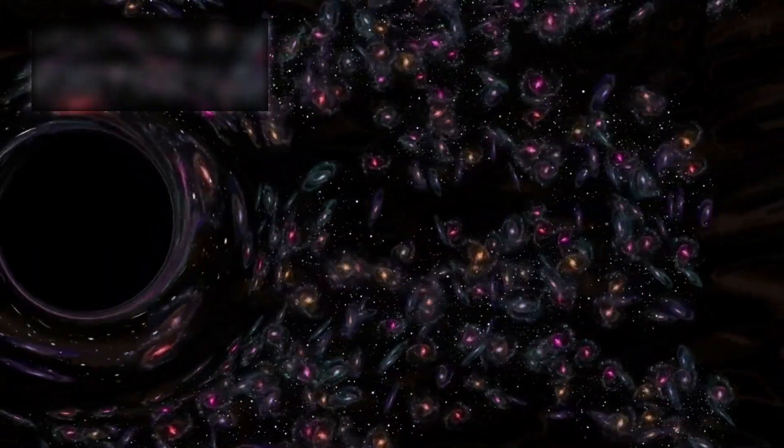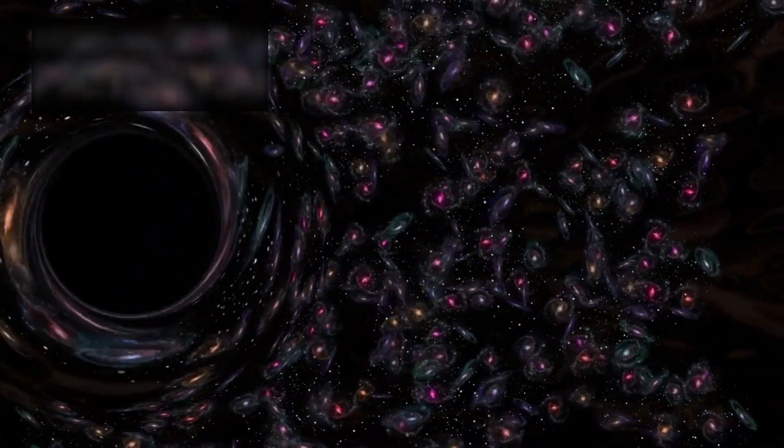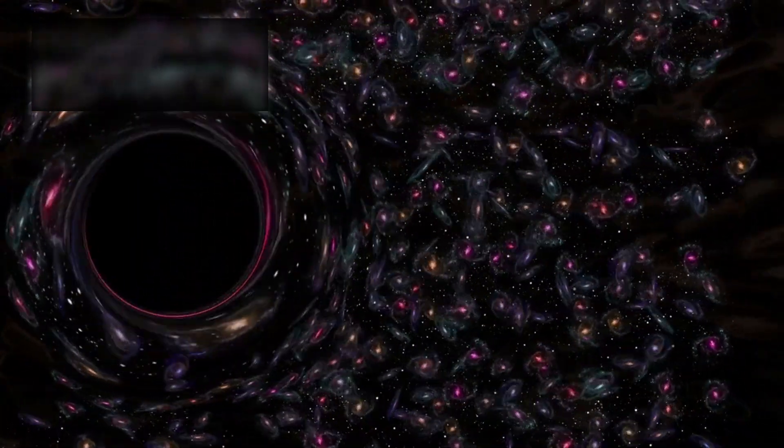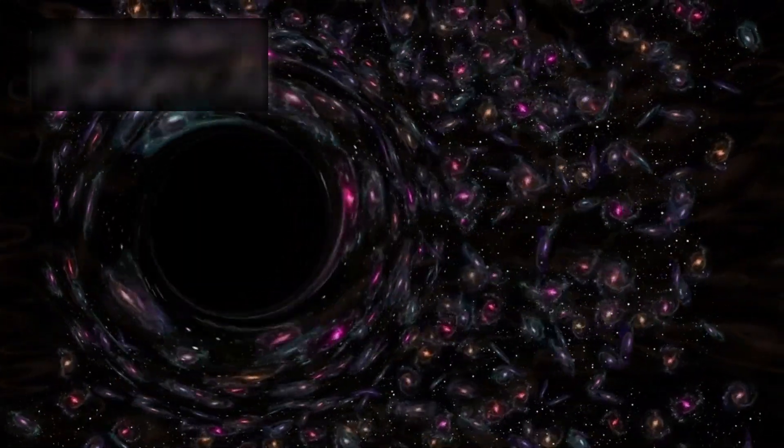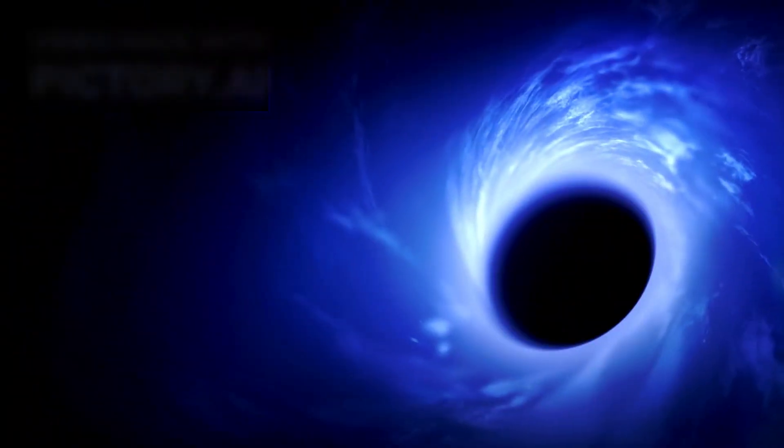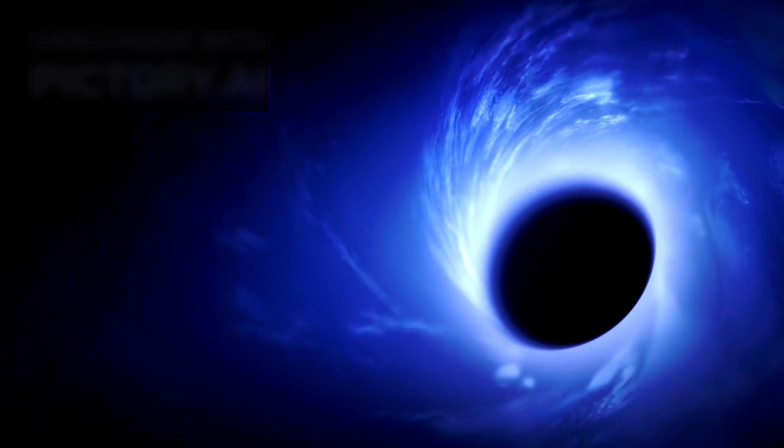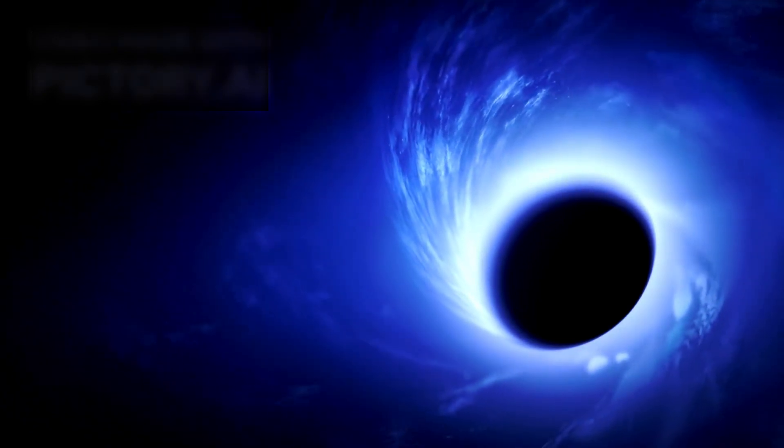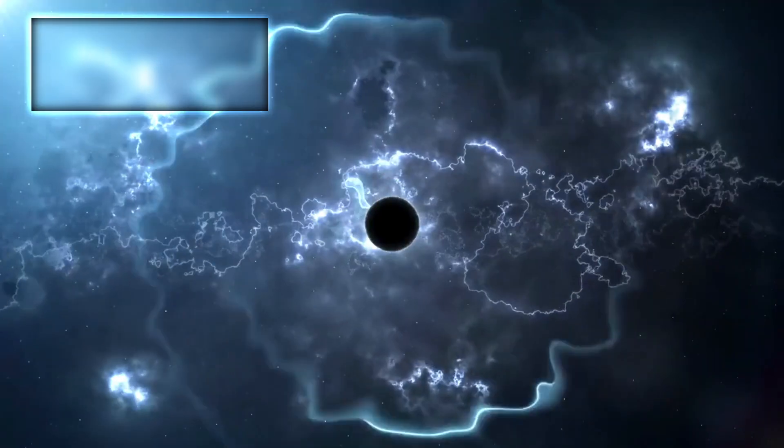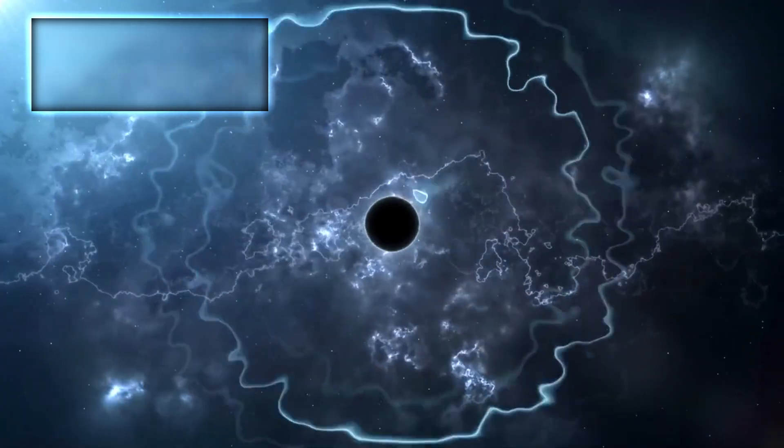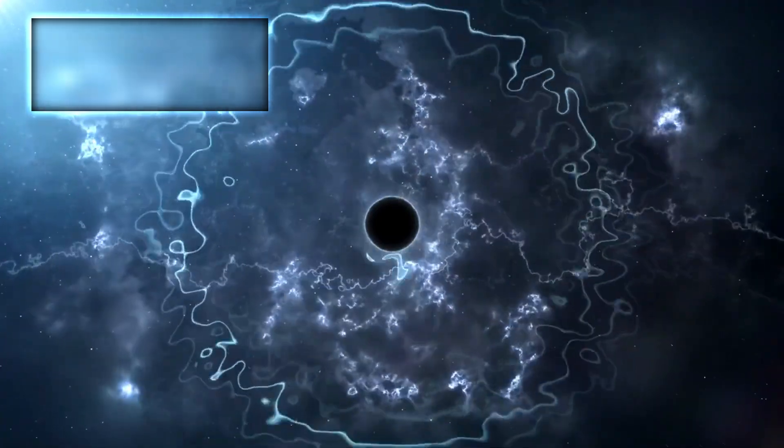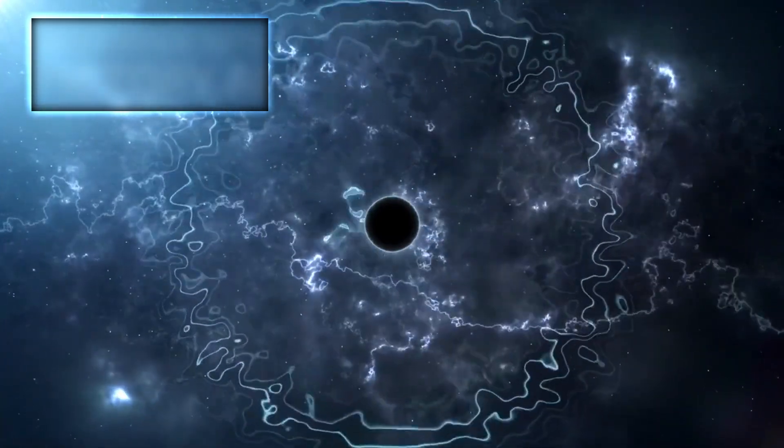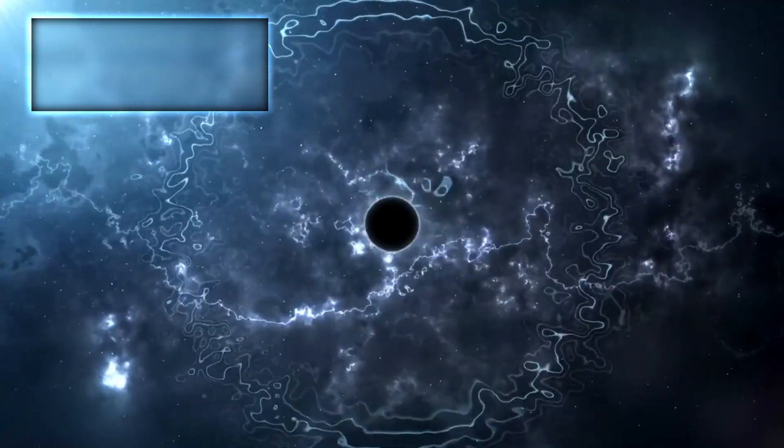Despite their abundance, scientists estimate there may be over 100 million black holes in our galaxy alone. Directly observing them is incredibly difficult. Since no light escapes a black hole, traditional telescopes can't see them. Instead, astronomers detect their presence by studying their gravitational influence and the behavior of matter nearby. When gas and dust spiral into a black hole, they heat up to extreme temperatures, emitting powerful radiation, particularly in the X-ray spectrum.